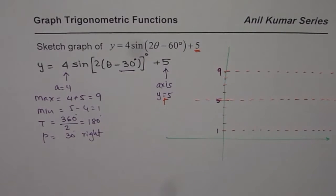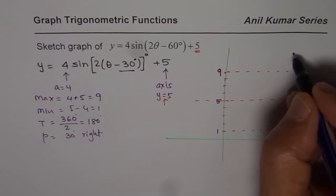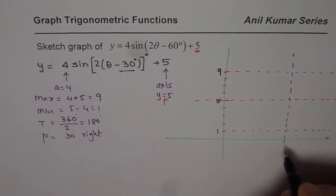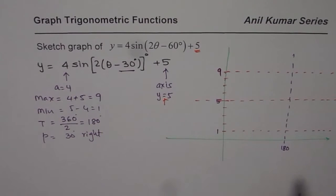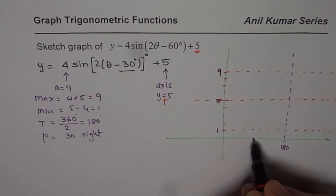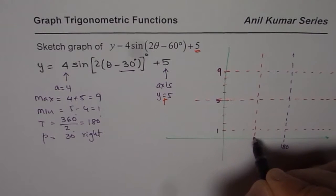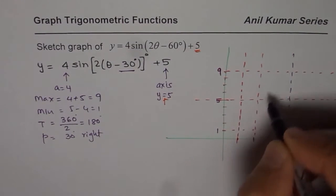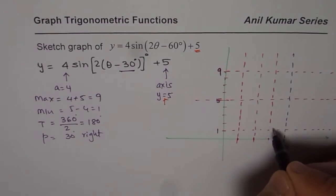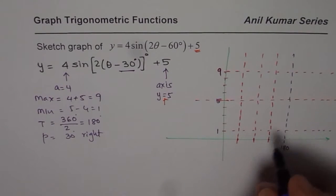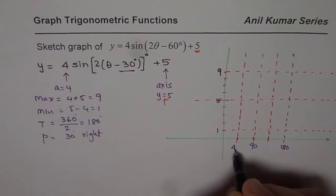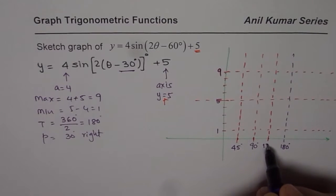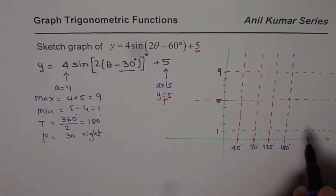We have a time period of 180. Whenever you are drawing trigonometric functions it is a good idea to split the time period into 4 quarters. Half of 180 is 90, so let me draw dotted lines for half and then 1 fourth and 3 fourths. We can write this as 90, that one is 45, then add 45 to get 135.